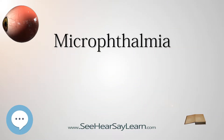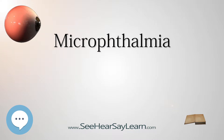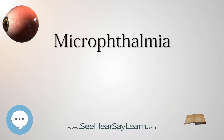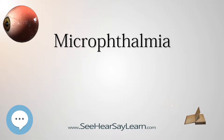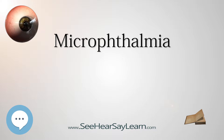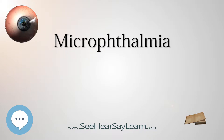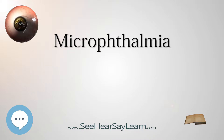Microphthalmia, from Greek: micros equals small, ophthalmus equals eye, also referred to as microphthalmus, is a developmental disorder of the eye in which one (unilateral microphthalmia) or both (bilateral microphthalmia) eyes are abnormally small and have anatomic malformations. It is different from nanophthalmus, in which the eye is small in size but has no anatomical alterations.